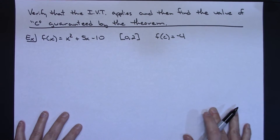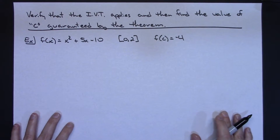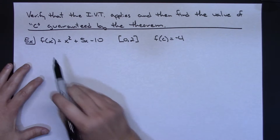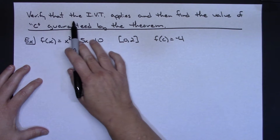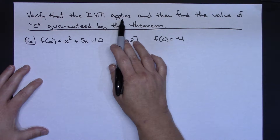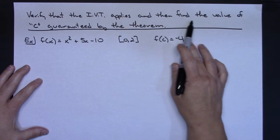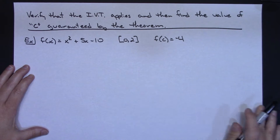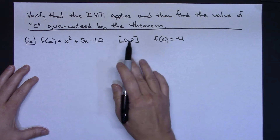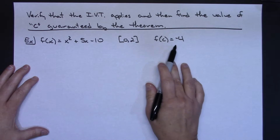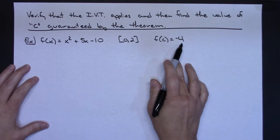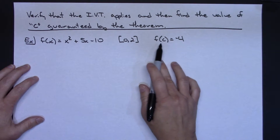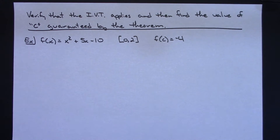Now let's take a look at an example. The directions tell us to verify that the Intermediate Value Theorem applies and then find the value of C guaranteed by the theorem. They'll give us a function, a closed interval, and a K value — F of C has to equal negative 4.